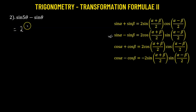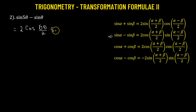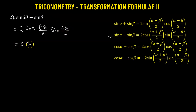This gives us 2 times cosine first. We have cosine of (5θ + θ)/2, which is 6θ/2, multiplied by sine of the difference of the angles, (5θ − θ)/2, which is 4θ/2. Finally, that gives us 2 times cosine 3θ times sine 2θ.